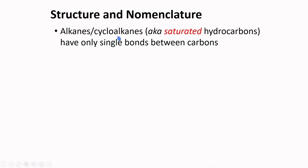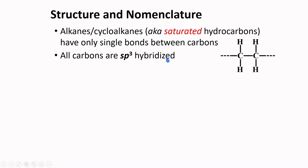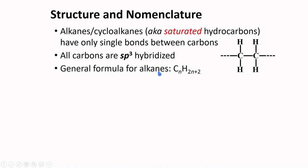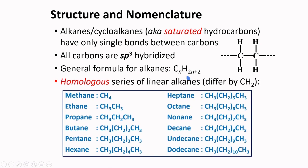Alkanes and cycloalkanes, also known as saturated hydrocarbons, have only single bonds between carbons. All carbons in alkanes and cycloalkanes are sp3 hybridized. The general formula for alkanes is CnH2n+2. For linear alkanes, we can have a homologous series which differ only by a CH2 group.